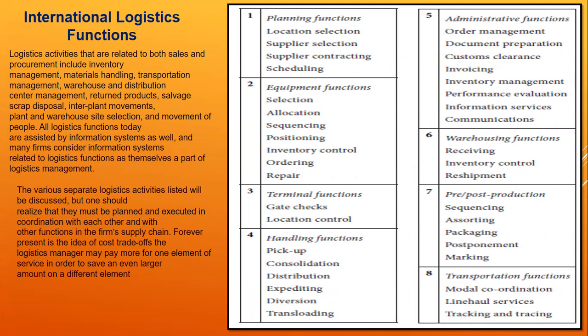In international logistics, the movement of goods from sourcing to destination is covered. Logistics activity is related to both sale and procurement, including inventory management. This logistics function includes not only the sale part but also the procurement part — for example, for manufacturing shoes you need to arrange raw materials, which requires transportation, handling, and packaging.